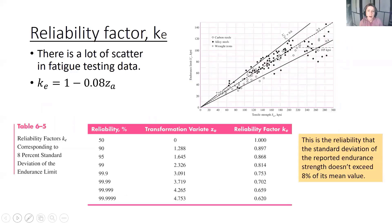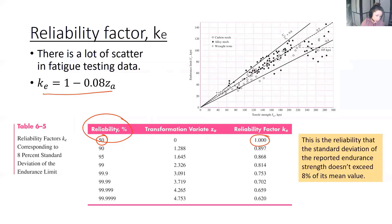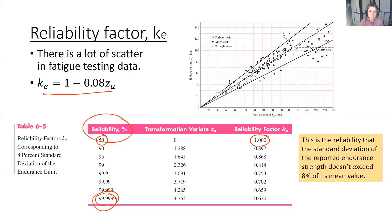The reliability factor KE accounts for the large scatter in fatigue testing data. You don't have to use the equation if given a reliability value directly — for example, 50% reliability gives KE = 1. This reliability refers to the standard deviation of the reported endurance strength not exceeding 8% of its mean value. Higher reliability means you're more confident the endurance limit you're using is close to test values. The reliability must be given to you in the problem statement.